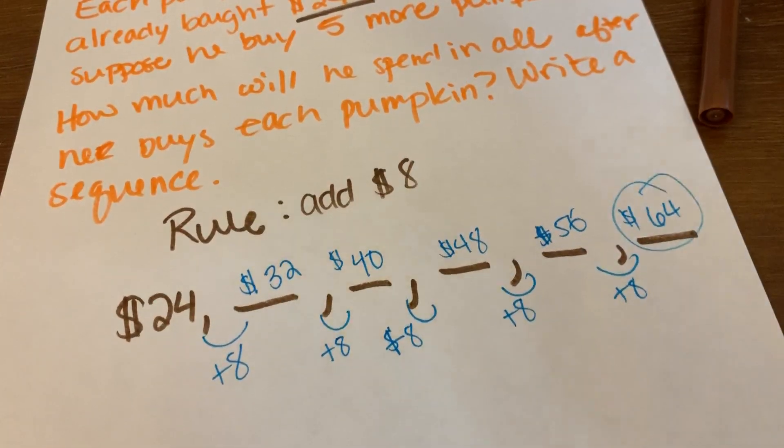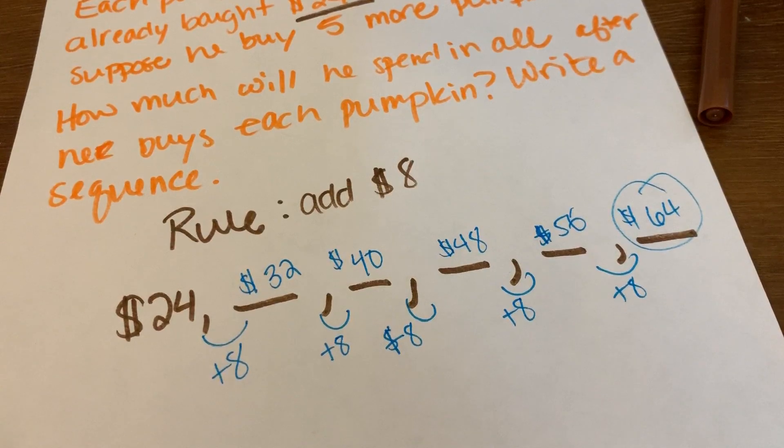So sequences are not that difficult. Once you figure out what the rule is, you just keep going and going until it asks you to stop.